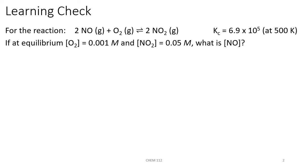Let's start out with the simplest type of example. We have the reaction 2NO plus O₂ forming 2NO₂. The equilibrium constant K sub C equals 6.9 times 10 to the 5th. At equilibrium, we know the concentration of O₂ is 0.001 molar and NO₂ is 0.05 molar.